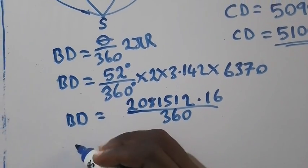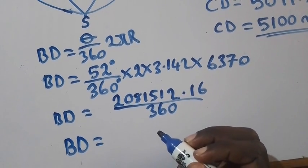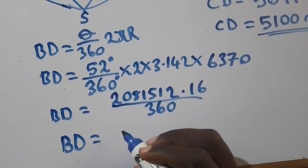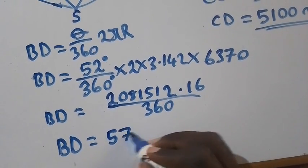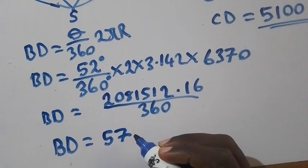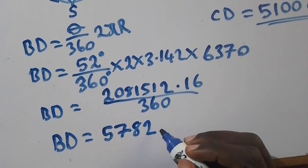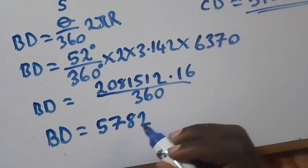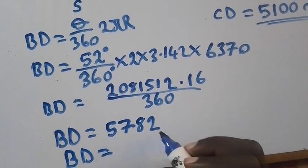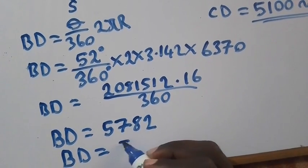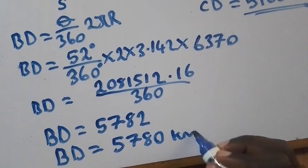So now if we divide the two numbers, we are getting 5,780.782. Now if we round off to three significant figures, 1, 2, 3, so this will be 5,780 kilometers.